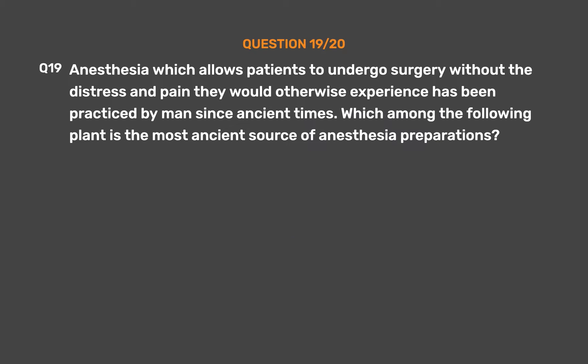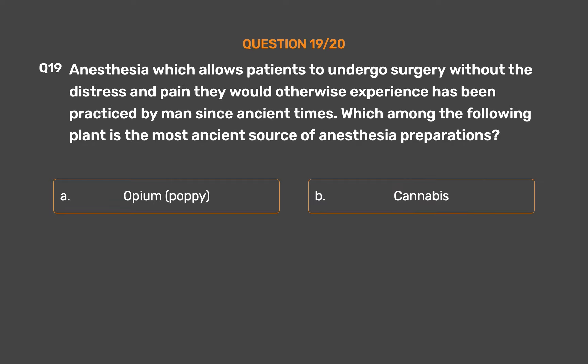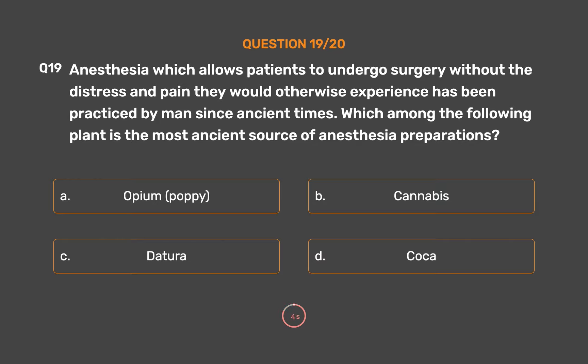Question No. 19. Anesthesia, which allows patients to undergo surgery without the distress and pain they would otherwise experience, has been practiced by man since ancient times. Which among the following plants is the most ancient source of anesthesia preparations? Option A: Opium Poppy. Option B: Cannabis. Option C: Dhatura. Option D: Coca. The correct answer is Option A: Opium Poppy.